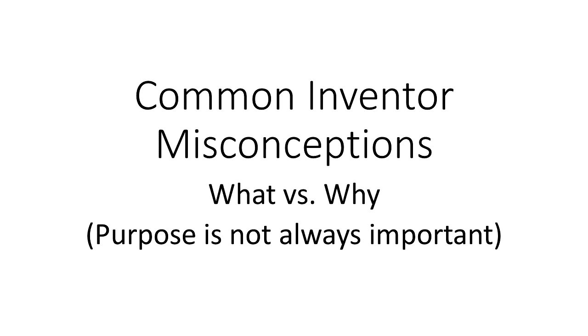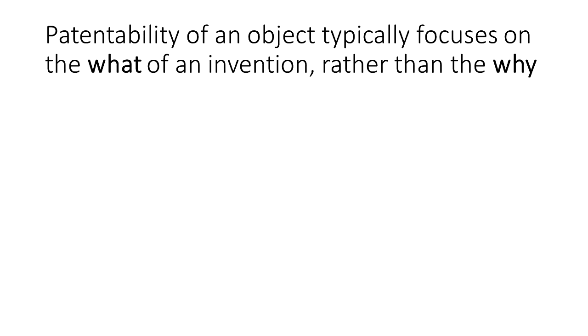In order to obtain a patent, in many cases, the detail of the what of an invention — what it is — is more important than why we would use the invention. If you're slightly confused, don't worry, we are now going to present an example that should hopefully clarify things.